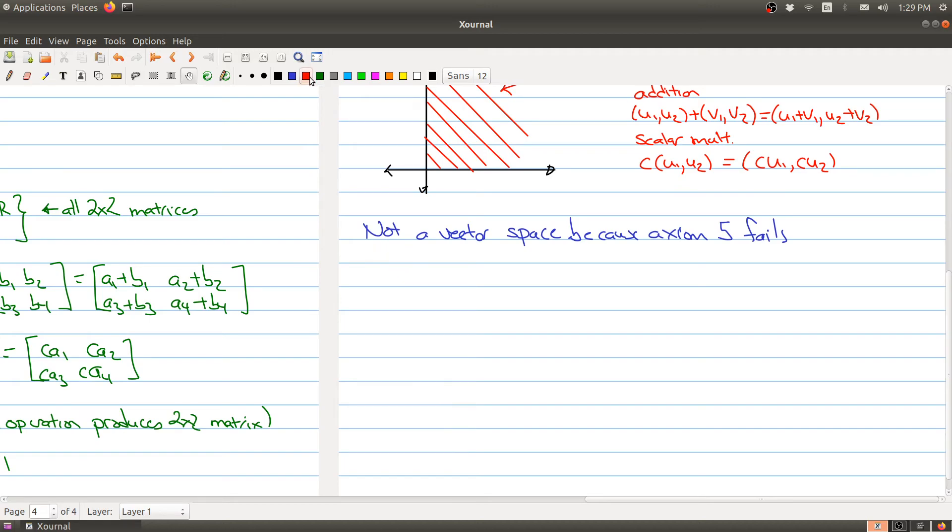Because (5, 6) is an element in R2 greater than or equal to, but there's no vector (V1, V2) in the set such that (5, 6) plus (V1, V2) is equal to (0, 0). Right? Because this guy is equal to 5 plus V1, and this is equal to 6 plus V2. And why is that?